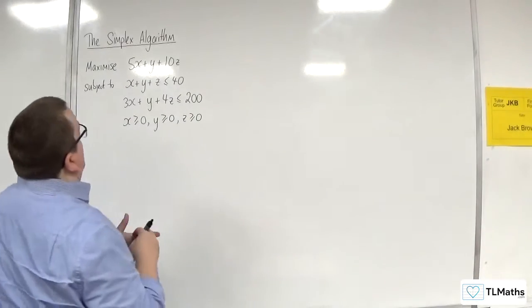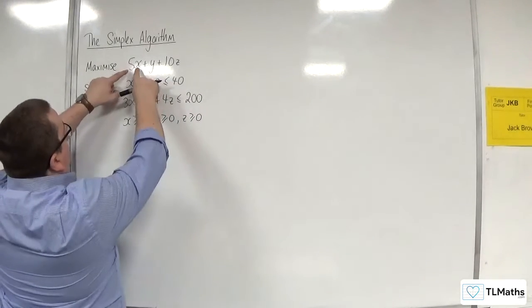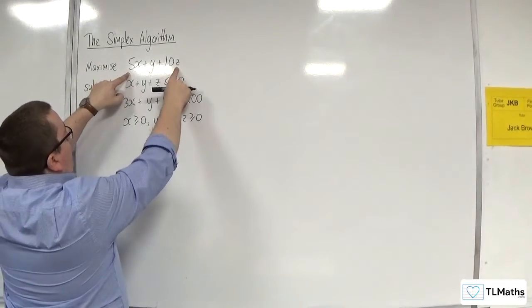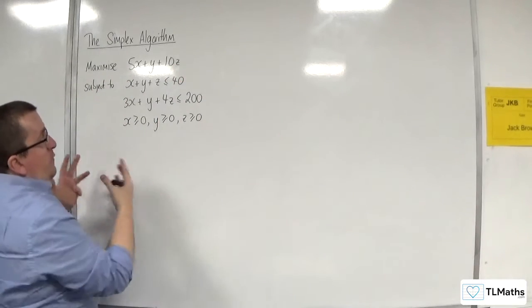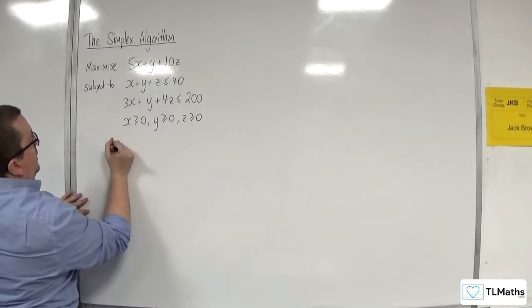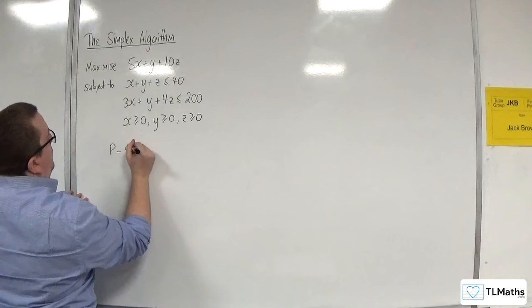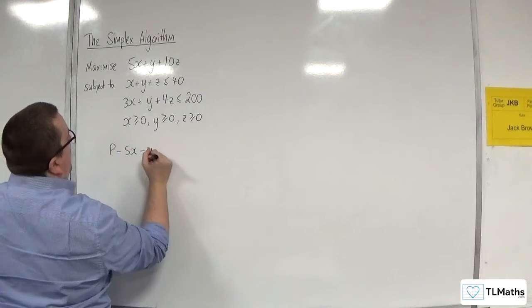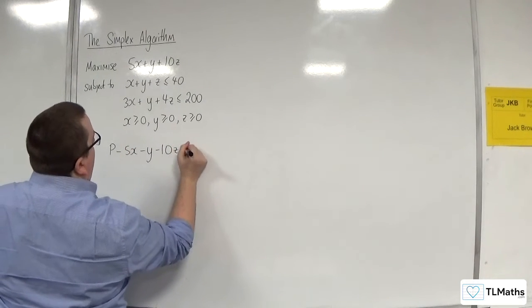So the first thing that we need to do is think about that top line here, and we're going to put that equal to p, and then I'm going to rearrange it, so move everything onto the left-hand side. So I'm going to have p take away 5x, take away y, take away 10z is equal to 0.